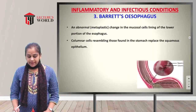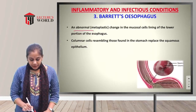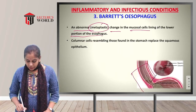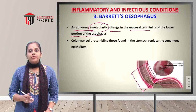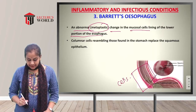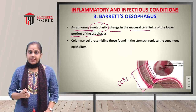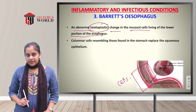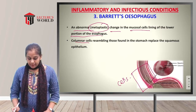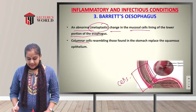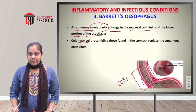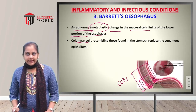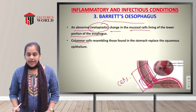The third condition is Barrett's esophagus — an abnormal or metaplastic change in the mucosal cells lining the lower portion of the esophagus. It occurs because gastric acid backflows into the esophagus, causing irritation. Columnar cells resembling those found in the stomach replace the squamous epithelium, forming a thickened lining in the lower portion of the esophagus. This is known as Barrett's esophagus.